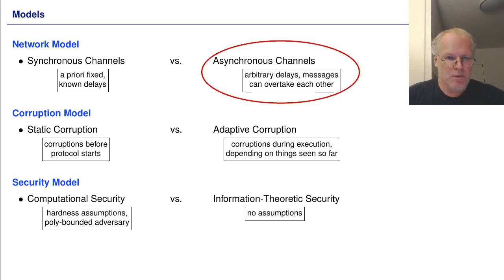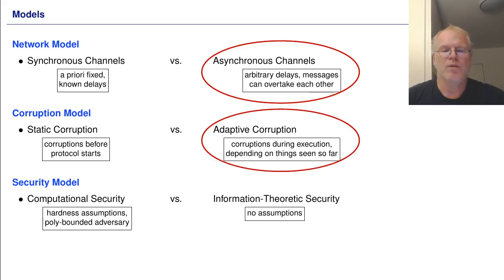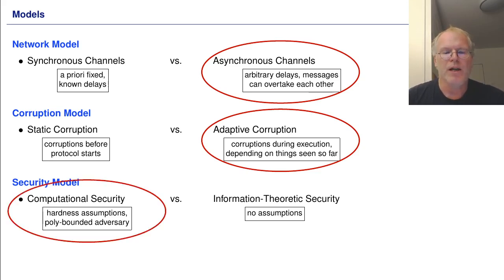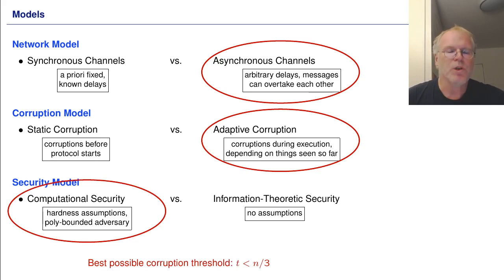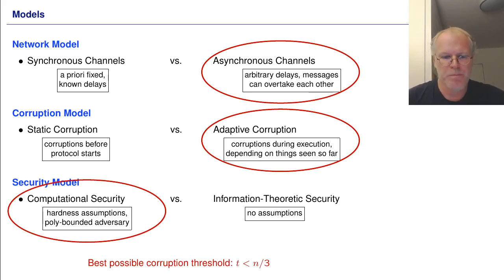In this work, we consider the asynchronous network model, we allow the adversary to adaptively corrupt parties, and we are after computational security. In this model, the best possible corruption threshold is T smaller than N over 3.